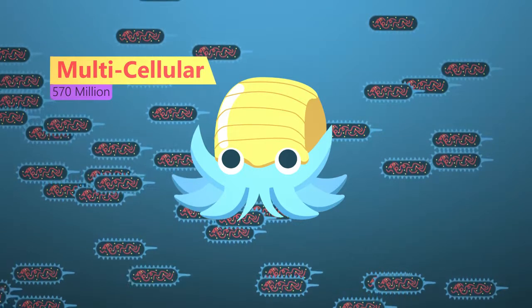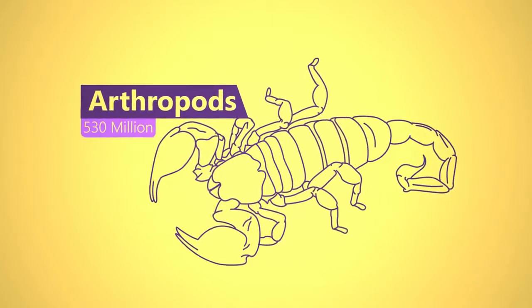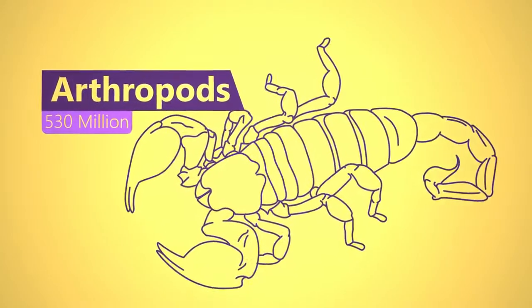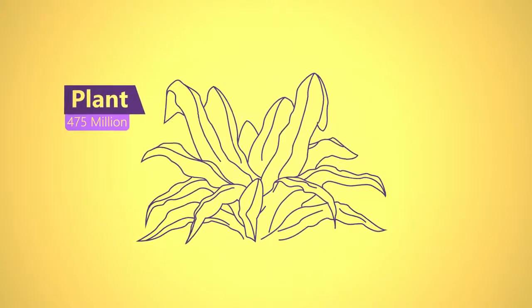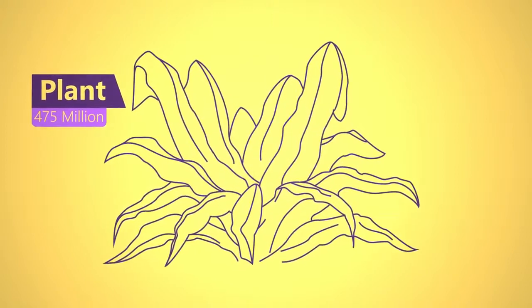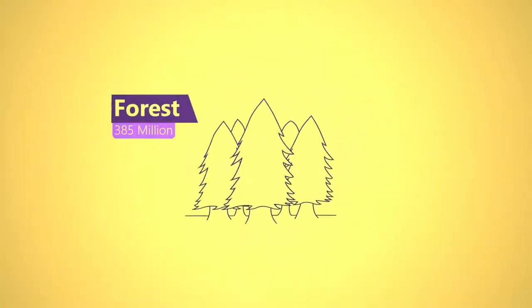Much of what we know about evolution comes from the fossil record. Arthropods came first, followed by fish about 530 million years ago. Then land plants 475 million years ago and forests 385 million years ago.